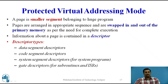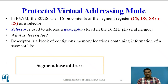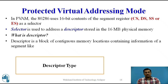There are different types of descriptors: data segment descriptors, code segment descriptors, system segment descriptors (used for system programs), and gate descriptors (used for subroutines). In protected virtual addressing mode, the 80286 uses the 16-bit contents of segment registers — code segment, data segment, stack segment, and extra segment — as a selector. A selector addresses a descriptor stored in the 16 MB physical memory. A descriptor is a block of contiguous memory locations containing information about a segment, including: segment base address, segment limit, segment type, privilege level, segment availability in physical memory, descriptor type, and whether the segment is used by another task.